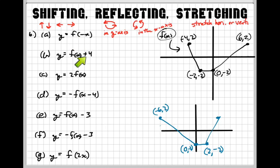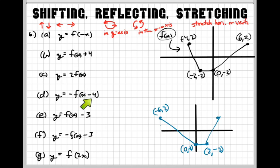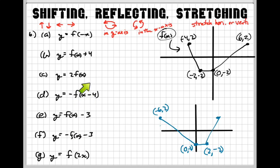A plus 4 adding to the f of x is more of a shift. Whenever you're adding or subtracting something to f of x, that's going to shift up and down or left and right. So here we have an adding 4, here we have a subtracting 4. There's a subtracting 3 and another subtracting 3 — those two will do the same thing. This subtracting 4 is going to do something different because it's doing it to the x.